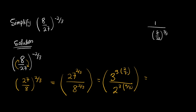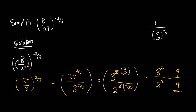So I will have 3 raised to the power 2 divided by 2 raised to the power 2. This equals 3 times 3, which gives 9, divided by 2 times 2, which gives 4. So my final answer is 9 over 4.